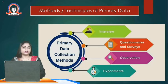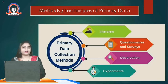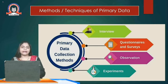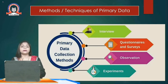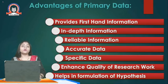So the four techniques of collecting primary data are: interview, questionnaire or survey, observation, and experimentation. In social science research, information is mainly obtained through questionnaires, surveys, or interviews — these are the main sources most researchers use.